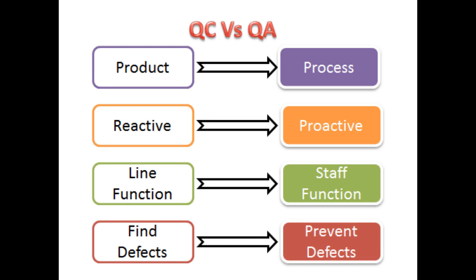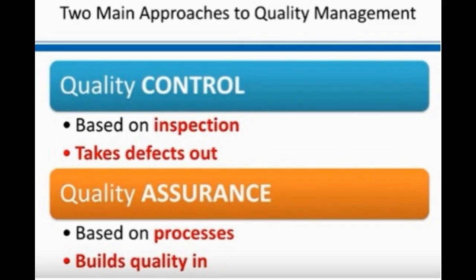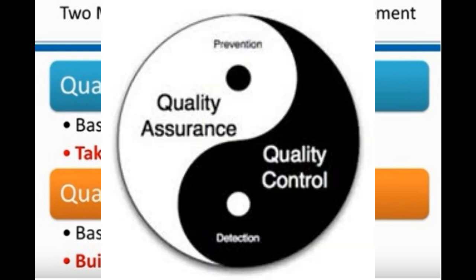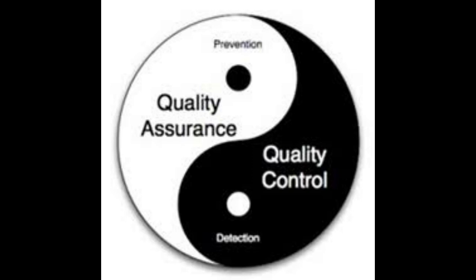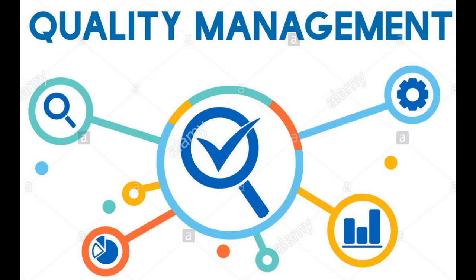Quality control just follows the set guidelines, discovers defects, and corrects them. So in a nutshell, quality control involves monitoring and verification activities, whereas quality assurance involves validation activities.